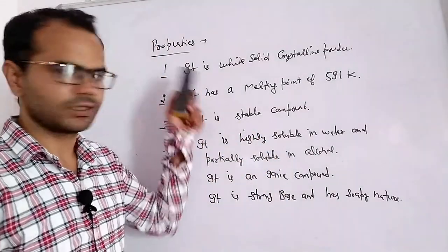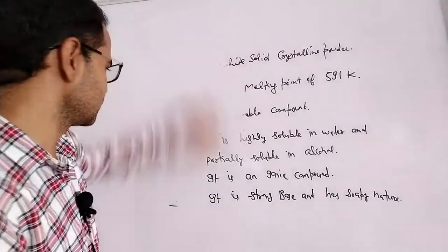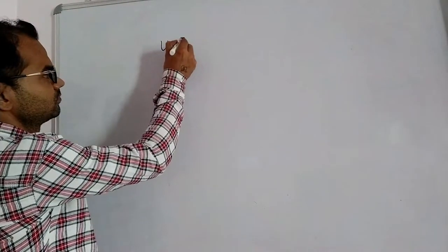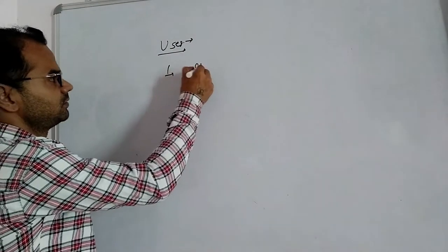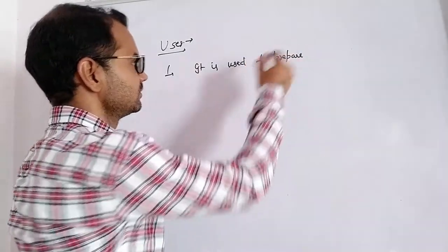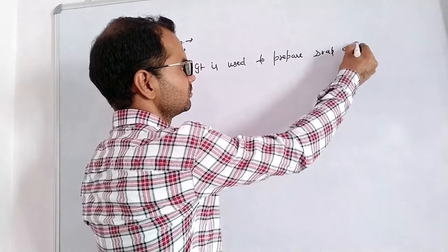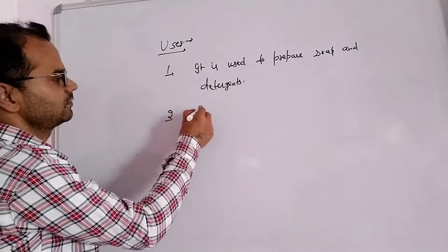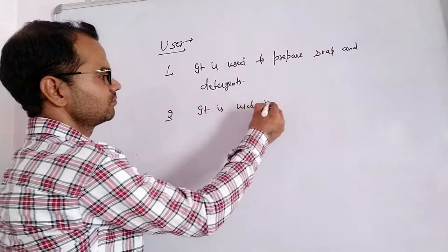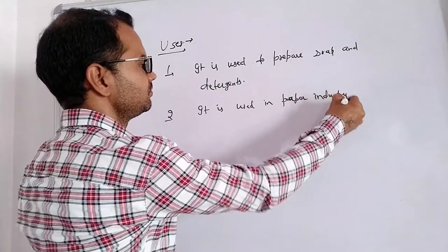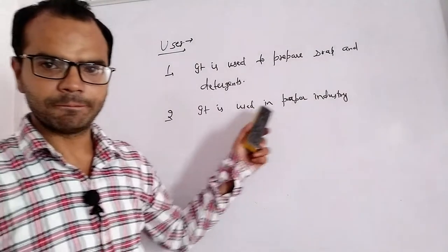These are the properties of caustic soda. Next are the uses of caustic soda. First, it is used to prepare soap and detergents. Second, it is used in the paper industry.